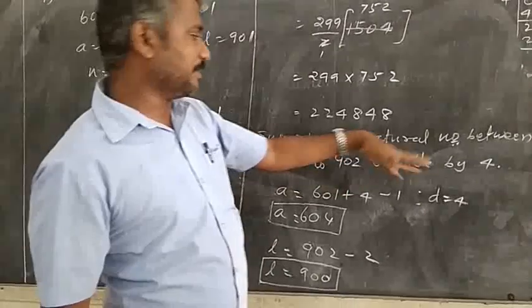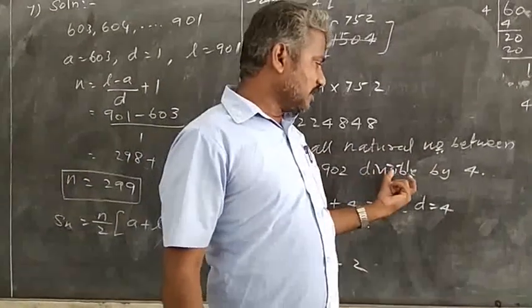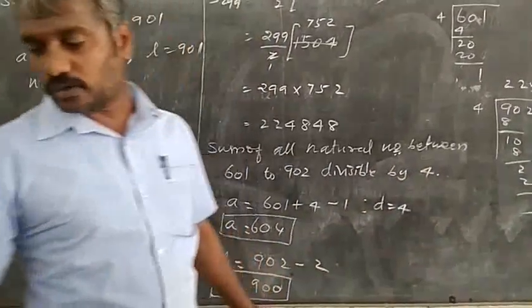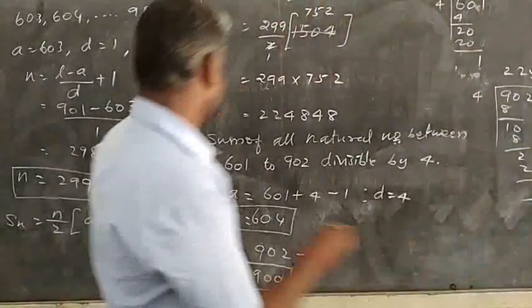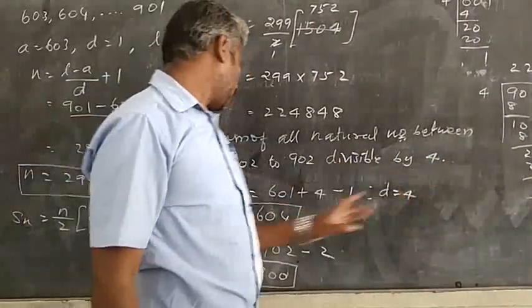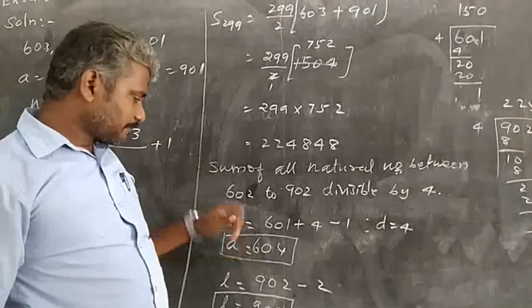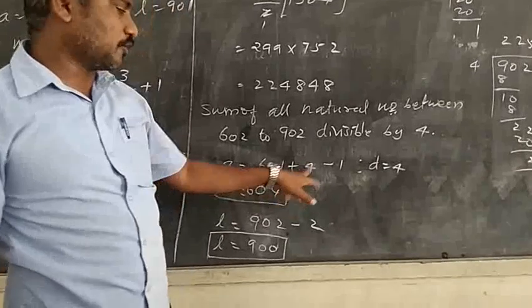Sum of all natural numbers between 601 and 602, 902 divisible by 4. A value 601 plus 4 minus 1.